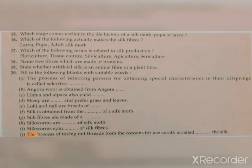Question eighteen: Name two fibers which are made of proteins. We know that plant fibers are made of cellulose and animal fibers are made of protein. So the animal fibers we have studied in this chapter are wool and silk — so the answer is wool and silk.